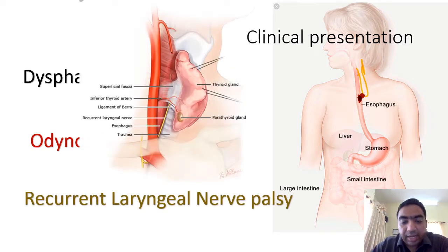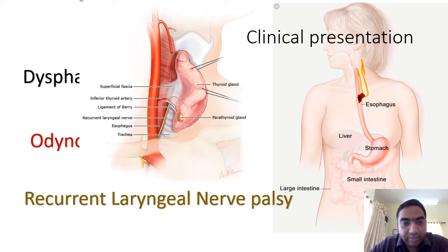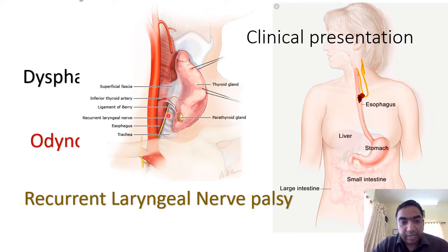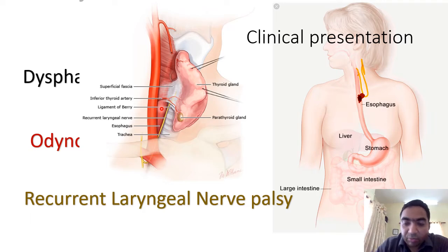Recurrent laryngeal nerve palsy can also occur. The recurrent laryngeal nerve lies in the tracheoesophageal groove — we can see it during thyroid surgery — between the trachea and the esophagus. Especially in upper esophageal tumors, there can be recurrent laryngeal nerve palsy and hoarseness of voice.